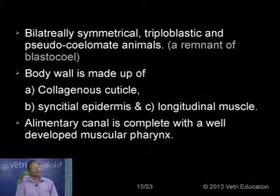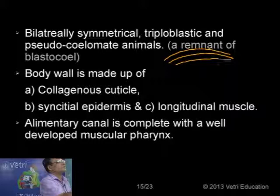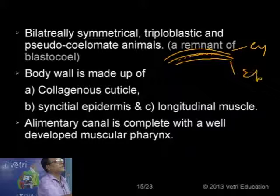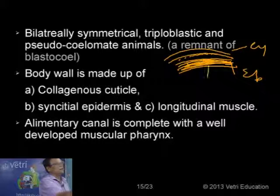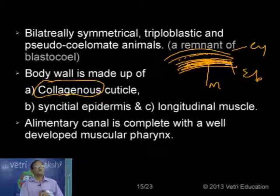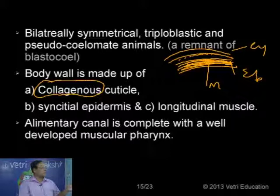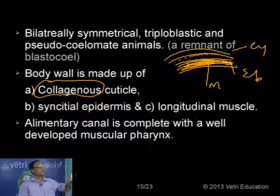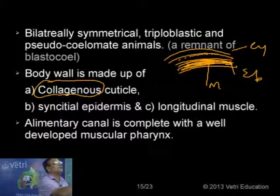Some of the animals are parasitic in nature. If we take the body wall, there are certain peculiar characteristics. We have an outer cuticle, then epidermis, and below which we have the muscular layer — three layers in the body wall. The outer cuticle is called a collagenous cuticle, meaning the cuticle is made up of collagenous protein. This collagen cannot be digested by the enzymes of our body, making it a parasitic adaptation for the parasitic mode of life.